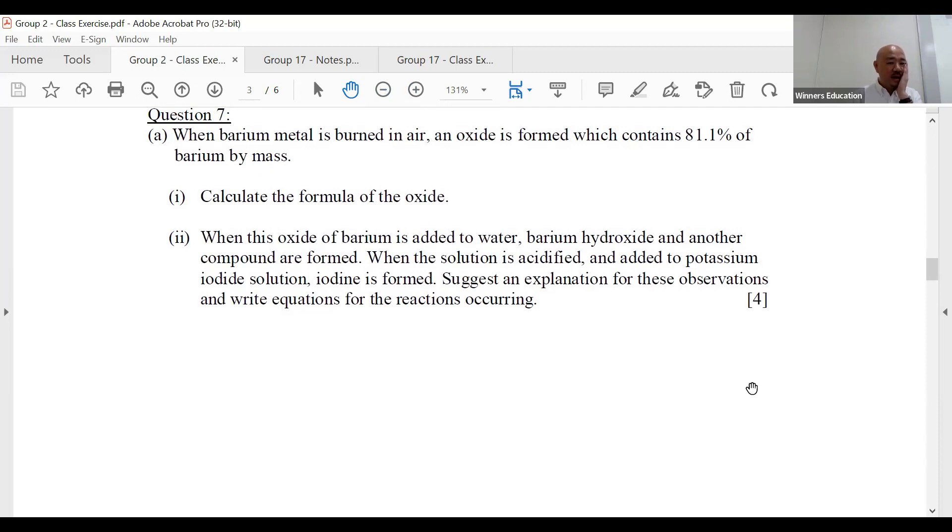When barium metal is burned in air, an oxide is formed, so I know very clearly it's barium oxide. It's formed which contains 81.1% barium by mass. So first thing, if we are in sec 3, sec 4, we would have thought barium oxide is this one, 2+ 2-, but now life is not so simple.